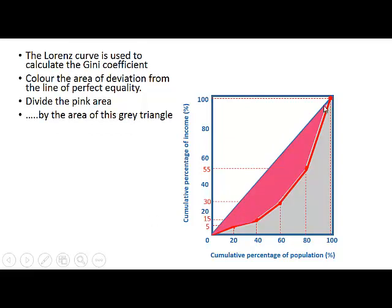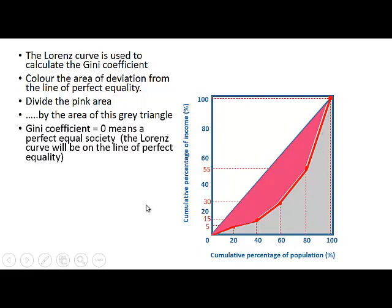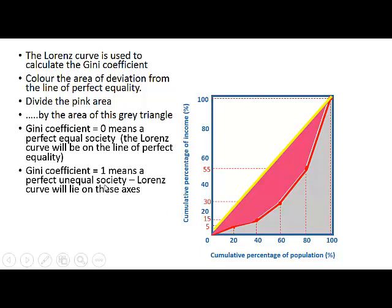The Gini coefficient is the pink area divided by the total gray triangle. If the Gini coefficient is 0, it means it's a perfectly equal society, because then the Lorenz curve will be on the line of perfect equality. Whereas a Gini coefficient equal to 1 means a perfectly unequal society — then the Lorenz curve will lie on the axes.